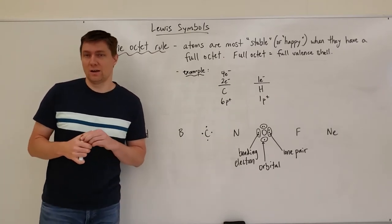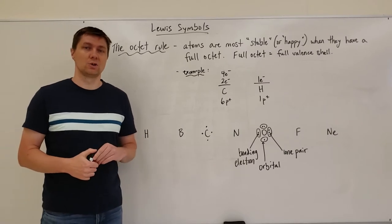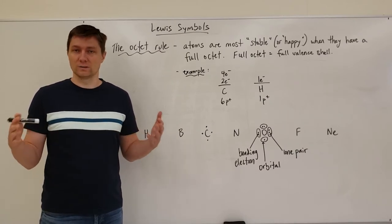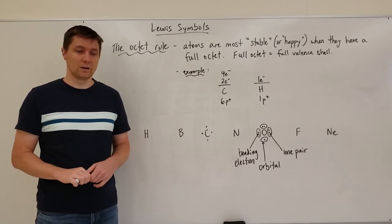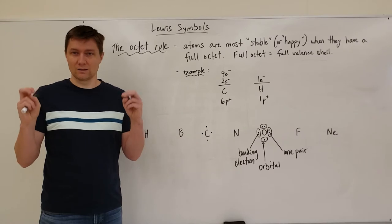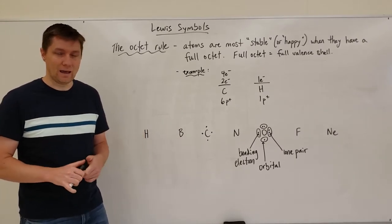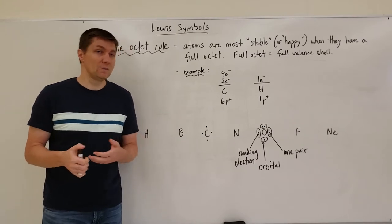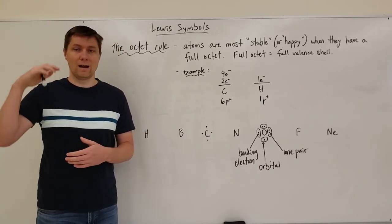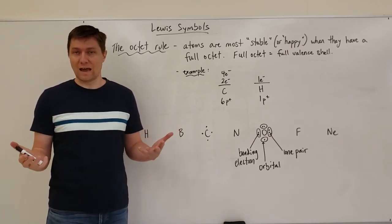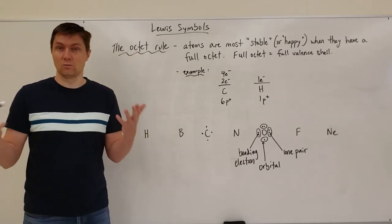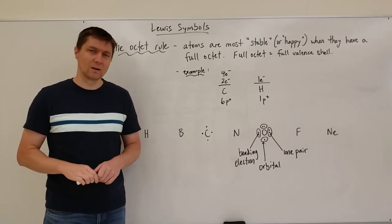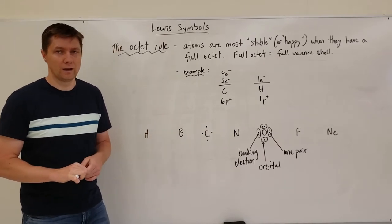The first term you need to understand in the bonding unit is what's called the octet rule. The octet rule is simply that every atom on the periodic table wants to be stable — or what I like to refer to as its 'happy state.' Atoms want to be stable and the way that they're stable is they have a full octet, meaning their outermost valence shell is full of electrons. For most atoms, that's going to be eight electrons — that's why we call it the octet rule, because 'oct' and 'eight' mean the same thing.